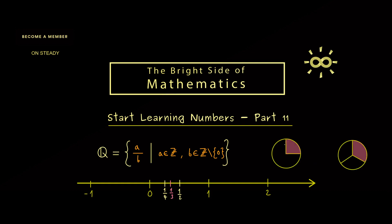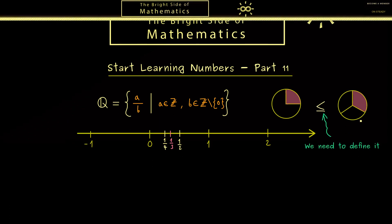Of course, if we think of ratios, one quarter should be less than one third. However, this less or equal sign here we first have to define, and that is exactly the thing we want to do in this video today.